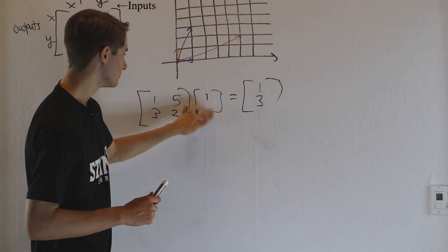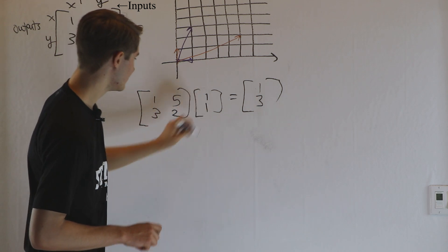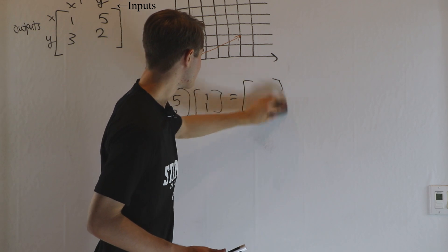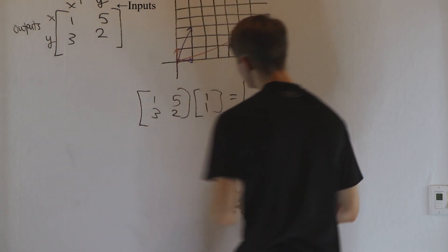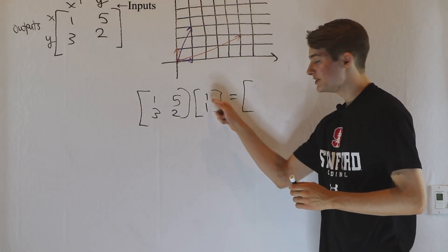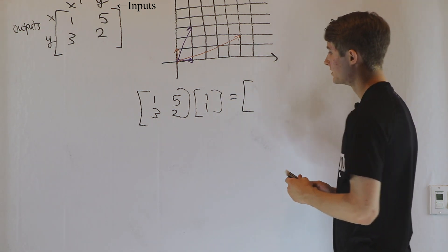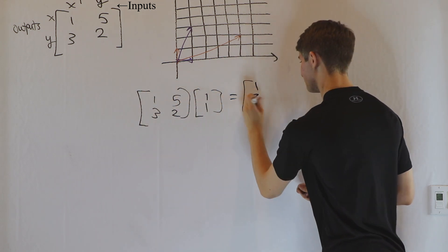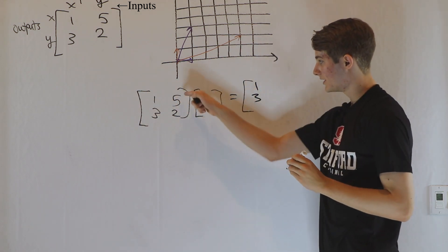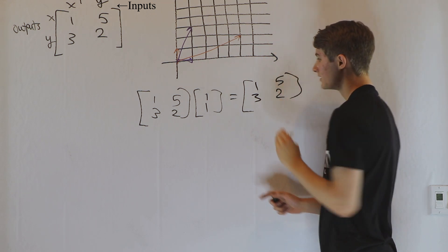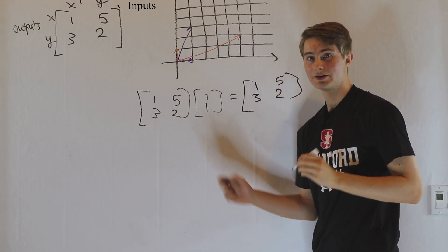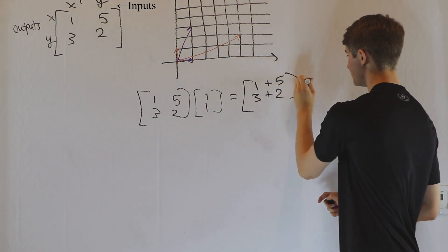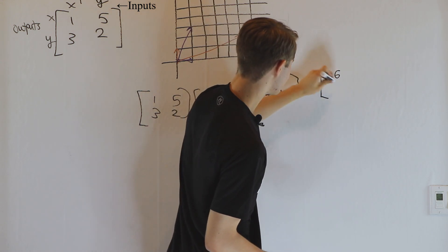And the question is: what if instead of just having x inputs or just having y inputs, we have both? So if we have [1, 1] as our input, what is our output going to be? We can figure out the outputs for each input separately. For the x input, our output is going to be [1, 3]. For the y input, our output is going to be [5, 2]. And if we're looking at both together, all we have to do is add these two outputs — that's going to give us the result [6, 5].